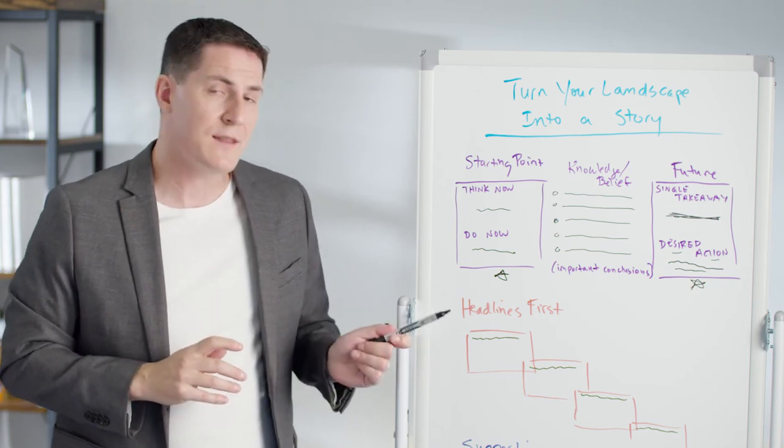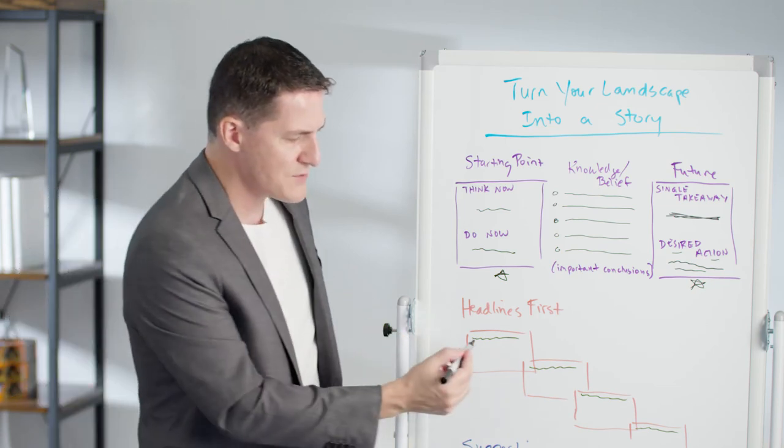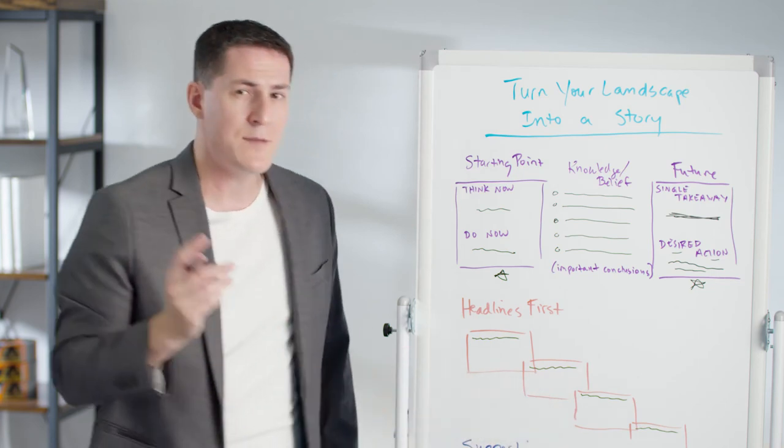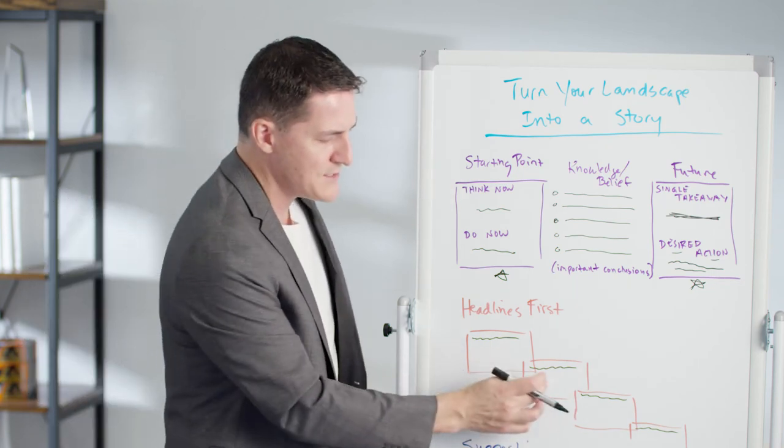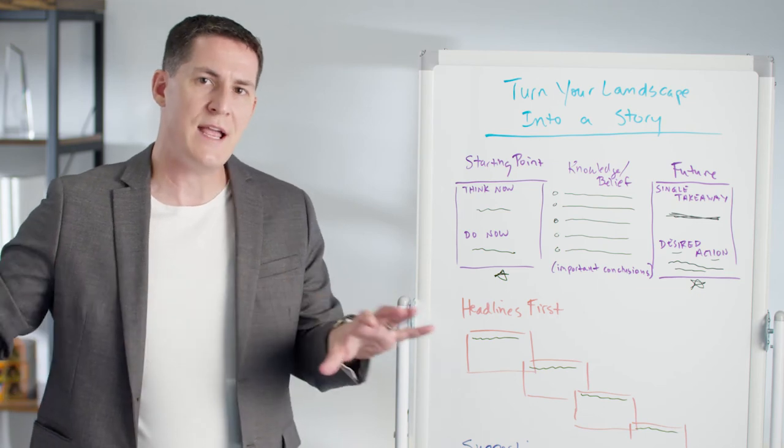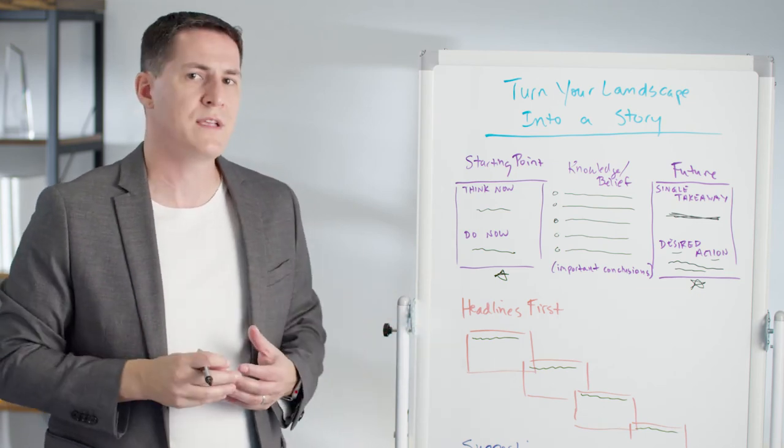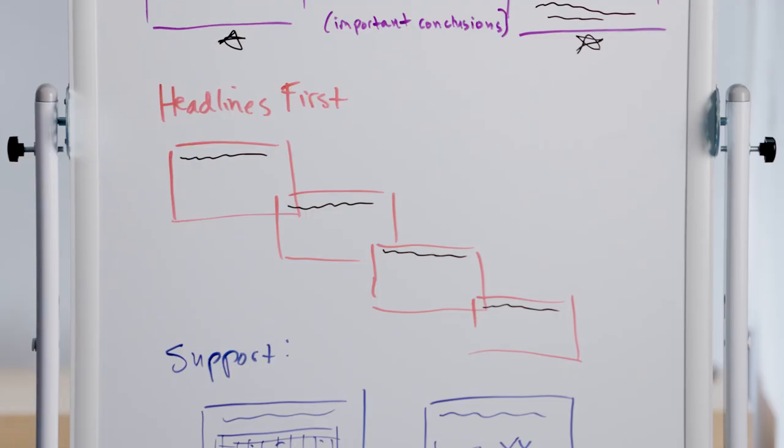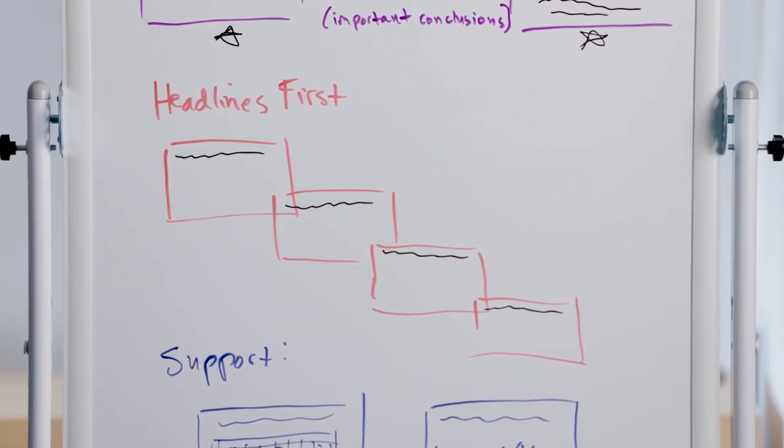Or you can go straight into outline mode into one of your favorite presentation softwares and write them that way. But the point is, write the headlines first because the headlines will drive your conclusions and story and make sure you include only the information that then goes with that story. And it helps you edit everything else out and bring the most important things to the surface. So always headlines first when you're writing the presentation.